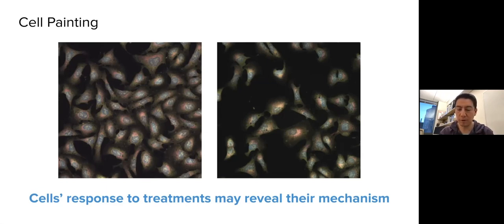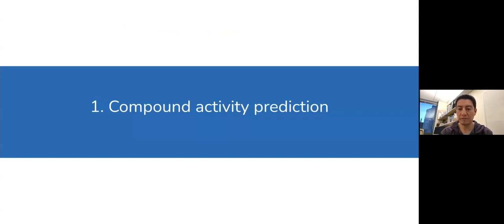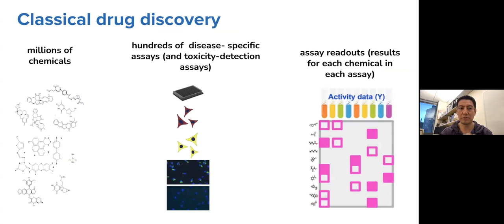In this talk I'm going to focus on two projects. One uses chemical perturbations for drug discovery, and the other uses genetic perturbations for cancer research. I'll start with compound activity prediction using images — where we take cells, perturb them with chemicals or drugs, then use cell painting to identify how different the response is for different compounds.